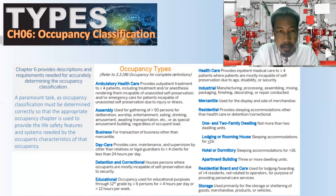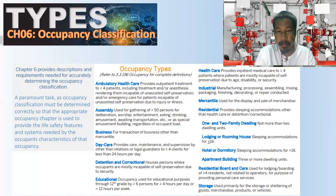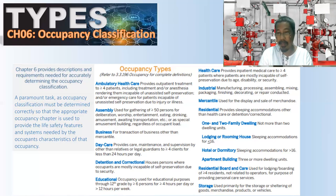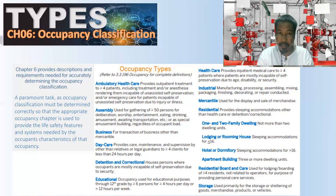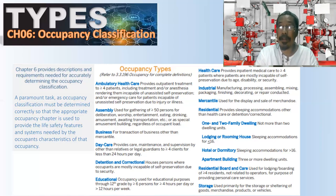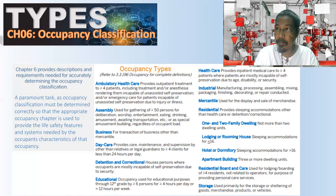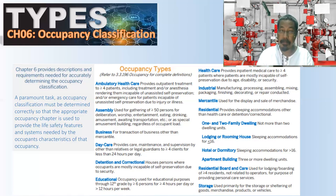Eating and drinking establishments such as restaurants with 50 or more persons are classified as assembly. Amusement venues like a gaming cafe with 50 or more gamers are also assembly. Additionally, awaiting transportation — such as terminals where 50 or more persons are waiting for a bus — also qualifies as an area of assembly.